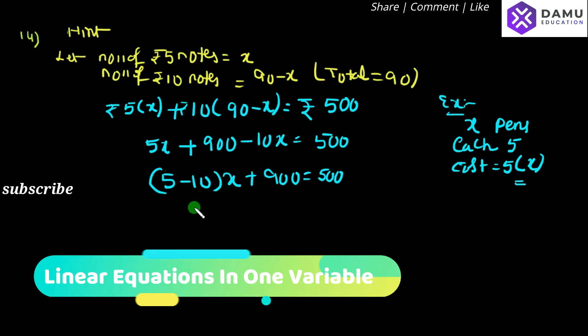Then 5 minus 10 will be, here we need to consider the sign. 5 will get subtracted, so the bigger number is 10, and before that minus is there, so we get minus 5x will be equal to 500.